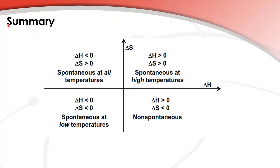Finally, a summary. An endothermic reaction with negative entropy (ΔH > 0, ΔS < 0) is non-spontaneous at any temperature. An exothermic reaction with a decrease in entropy is spontaneous at low temperatures. An exothermic reaction with an increase in entropy is spontaneous at all temperatures. And an endothermic reaction with an increase in entropy is spontaneous at high temperatures.